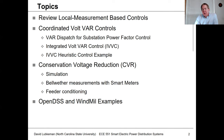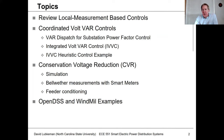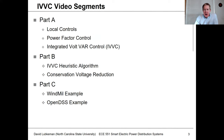There's also a functionality called conservation voltage reduction, which we'll discuss after covering IVVC-type algorithms where we integrate everything together. CVR is a subset of IVVC in that we want to reduce peak power consumption. We'll also look at some examples in Windmill and OpenDSS. The video is broken down into segments covering local controls, power factor controls, integrated volt-var control, and the heuristics in more detail.